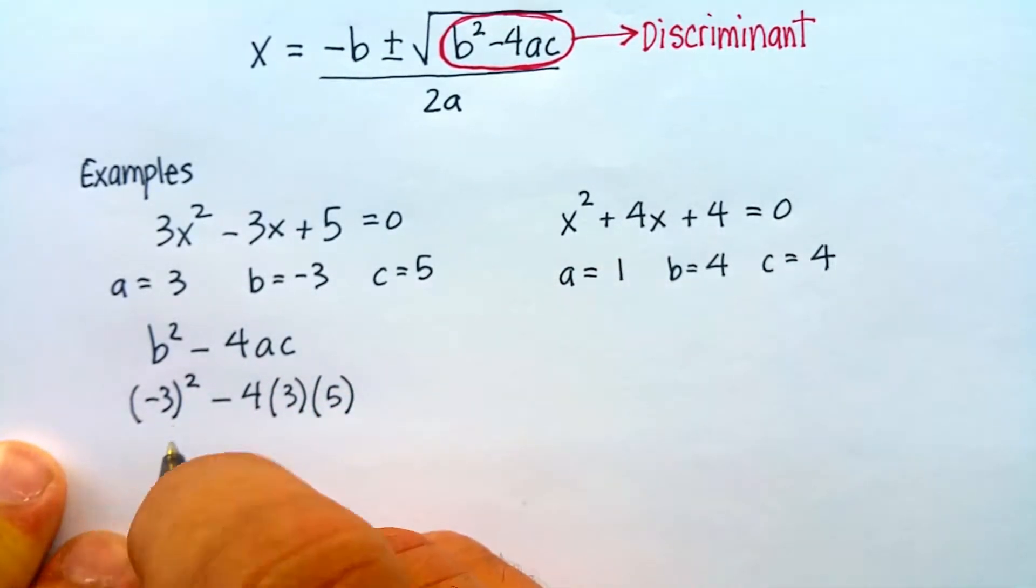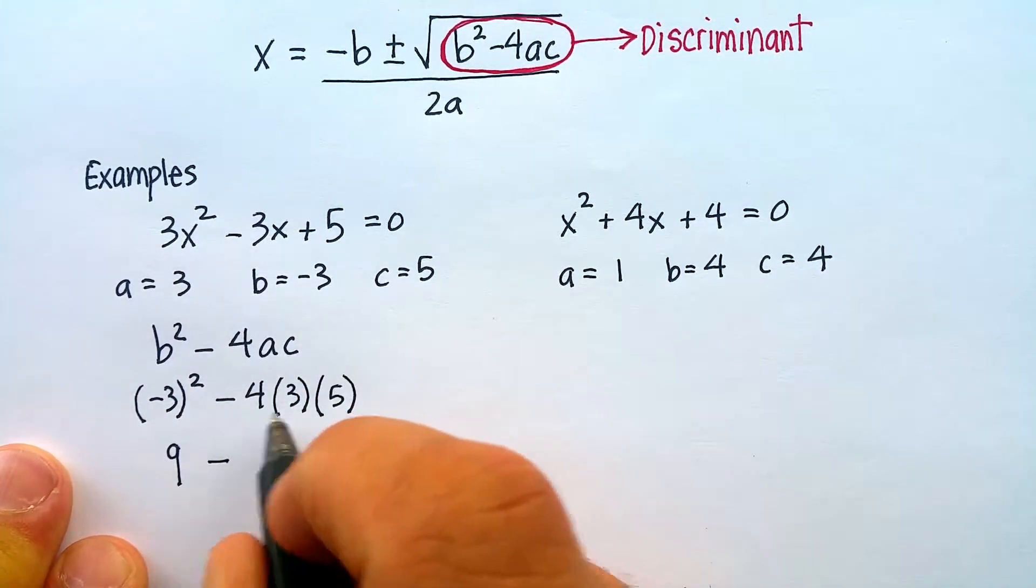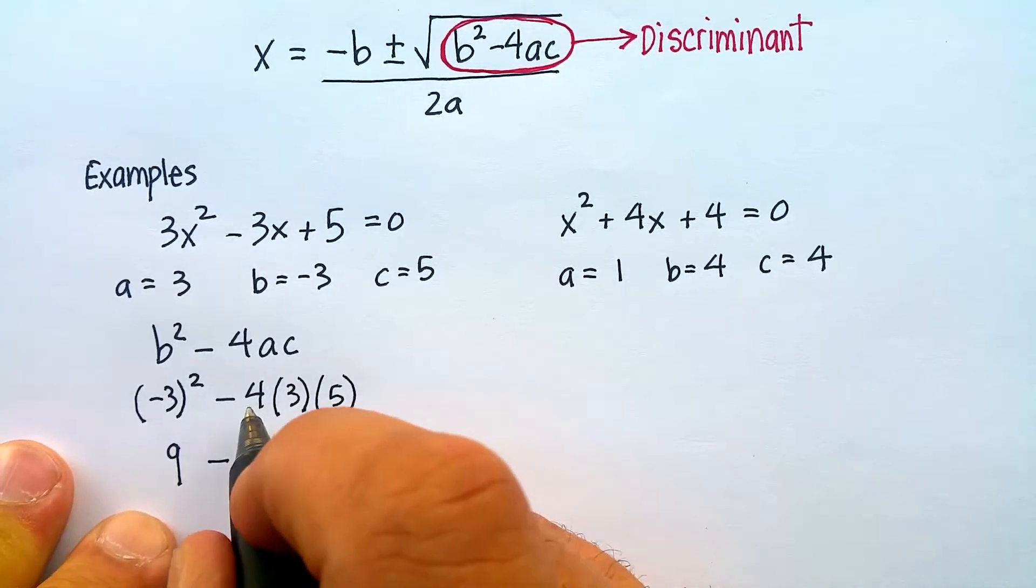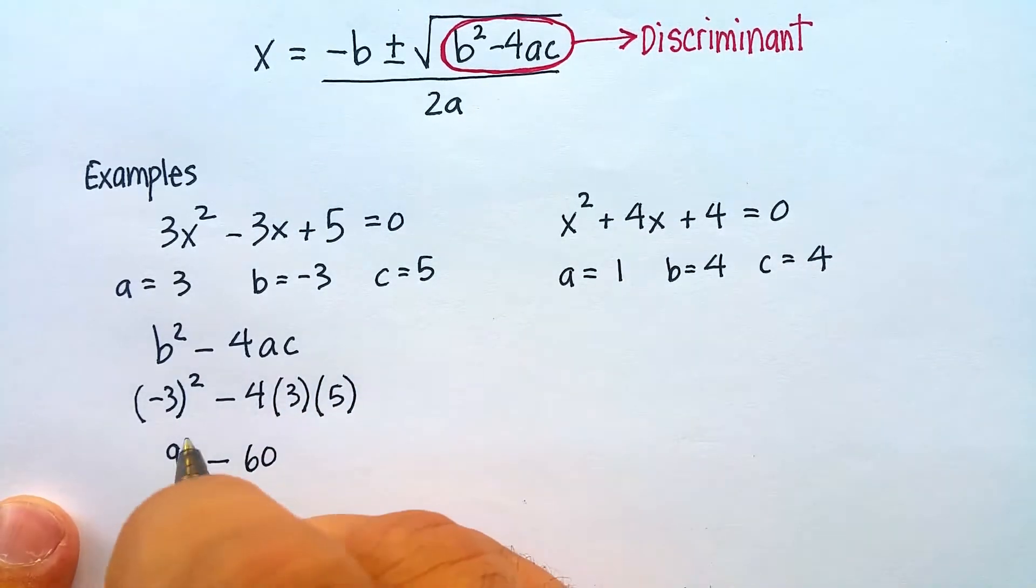Let's calculate. Negative 3 squared, following PEMDAS, gives me 9. Minus, and I can see right away, this is going to be greater than 9. So 12 times 5 is 60.